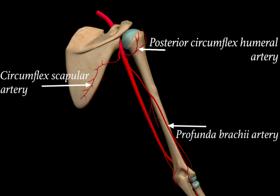Coming on to the contents of the intermuscular spaces, we will first see all the arteries. An artery is found behind the scapula which is known as the circumflex scapular artery, and it lies in the upper triangular space. Hence the circumflex scapular artery is the content of the upper triangular space. We also find an artery behind the humerus bone, which is the posterior circumflex humeral artery — hence it is the content of the quadrangular space.